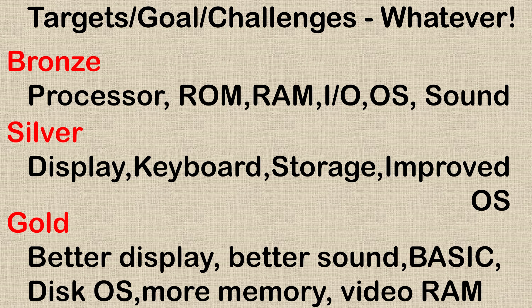We might not write our own BASIC — that's far too big a task — but we might get an implementation of BASIC running on our system, such as Microsoft BASIC, which was one of the main ones brought in by various manufacturers. We'll add some sort of standard disk operating system, and we'll add more memory than the processor should take using a technique called bank switching. We'll also look at what video RAM is and how you can access it.